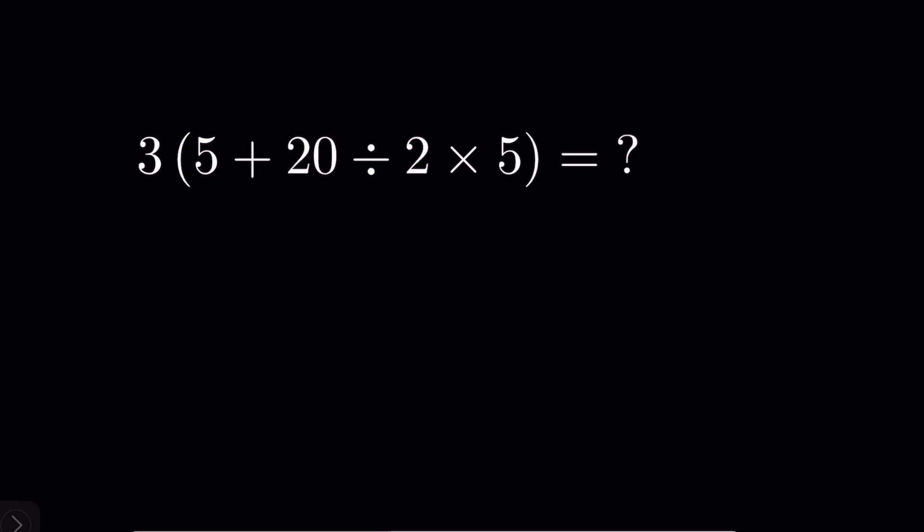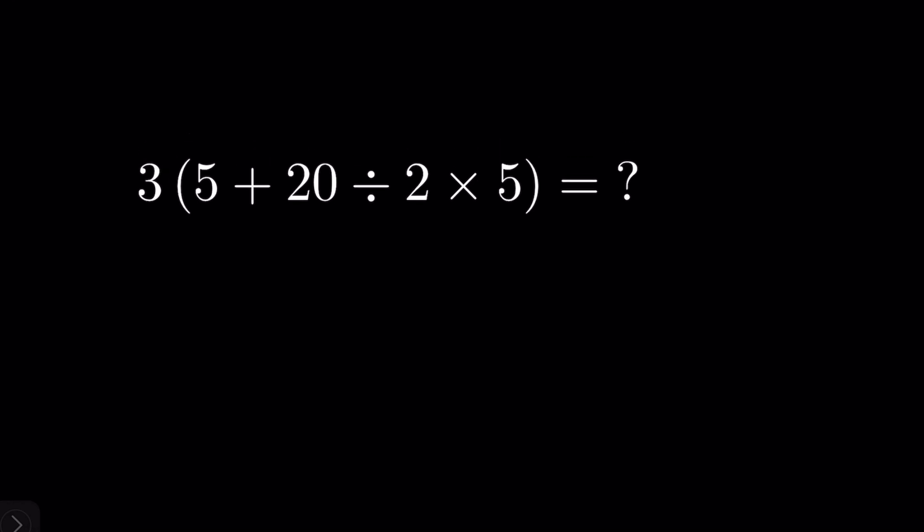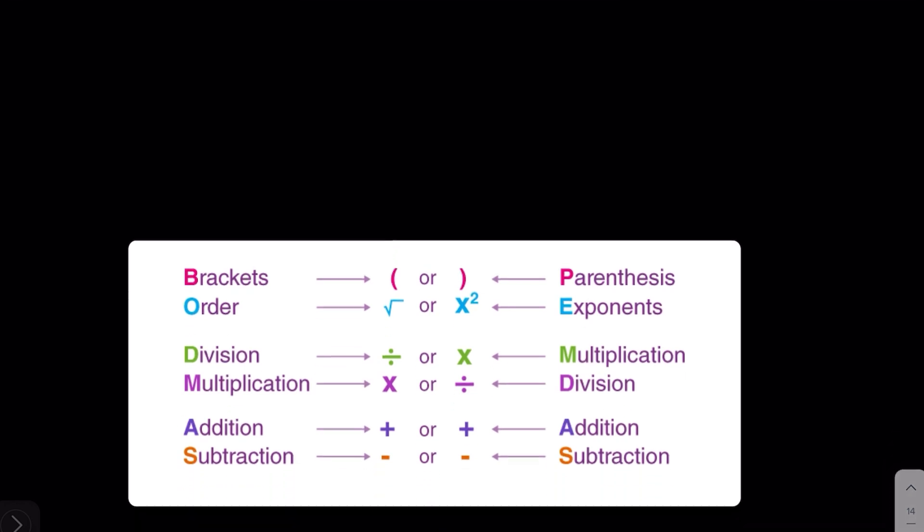3 bracket 5 plus 20 divided by 2 multiplied by 5 bracket closed is equal to what? This is a question of order of operations. So there are rules for order of operations. It's called BODMAS or BIDMAS or PEMDAS or PEDMAS.